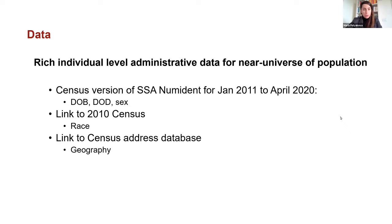We then link the Numident data to the 2010 U.S. Census, which allows us to obtain self-reported race indicators — rather than race reported by coroners as in CDC data — and to the Census address database to determine which state individuals live in. The result is a database of nearly all Americans from 2011 to April 2020, where we observe each person's date of birth, date of death if applicable, sex, race, and geography.